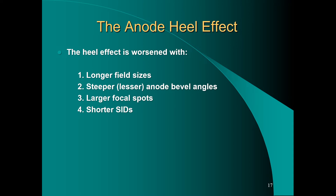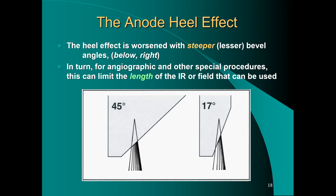The heel effect is worsened with longer field sizes along the length of the table, steeper anode bevel angles — such as the 7 to 10 degree angles on angiographic equipment rather than the typical 15 to 17 degrees in diagnostic x-ray — larger focal spot sizes, and shorter SIDs. For angiographic and special procedures, the steeper bevel can limit the usable length of the image receptor or field.